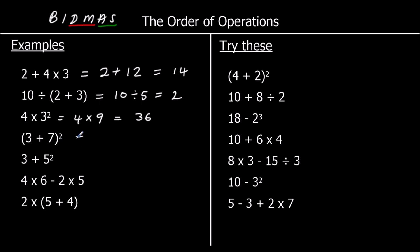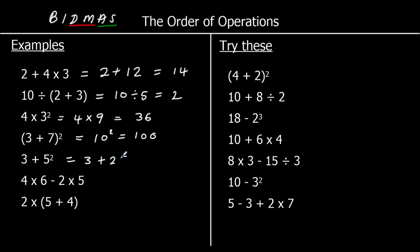The next one: we've got a bracket, so we'll do that first. 3 plus 7, that's 10, so we've got 10 squared, which is 100. On to the next one: we don't have a bracket, but we do have an index. 5 squared is 25, so we have 3 plus 25, which will be 28.